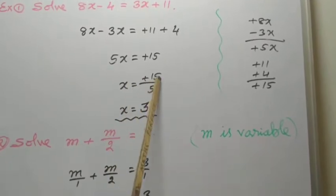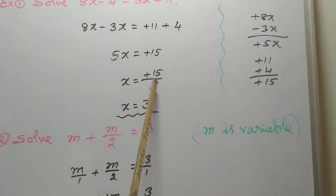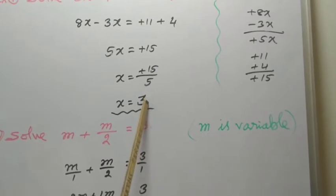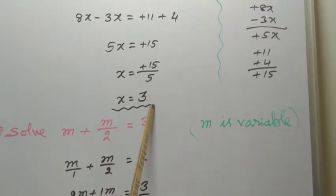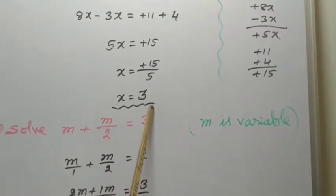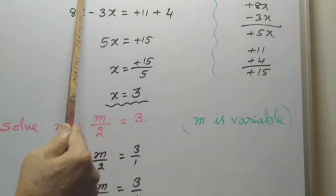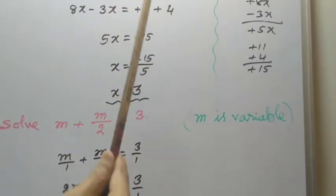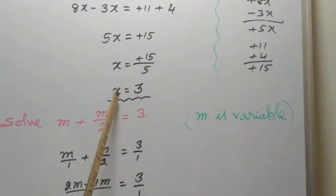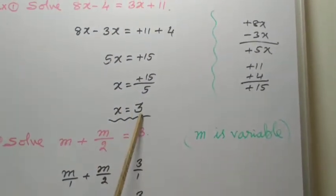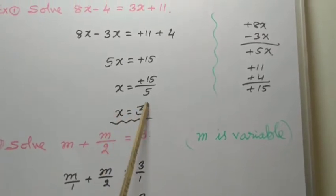X equal to 15 divided by 5. So 15 divided by 5 means the answer is 3. So the value of X is 3. If you substitute the value in this equation, both left-hand side and right-hand side should be equal. We call this as root or value of the variable.